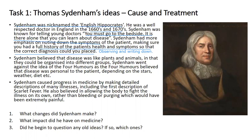Sydenham went against the idea of the four humours, which believed that disease was personal to the patient depending on the stars, weather, diet, and other factors. What Sydenham was saying was that certain diseases could be grouped — there were different diseases, and disease wasn't personal to the patient. It wasn't because the stars were lining up in a particular manner. He believed diseases could be grouped and that you found out about them by observing the patient, looking at different symptoms, writing them down, and coming to a conclusion.